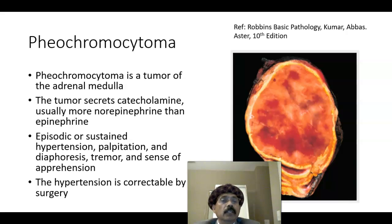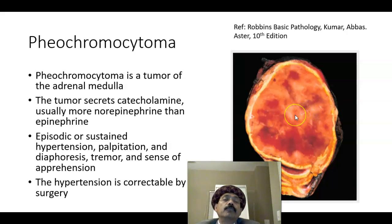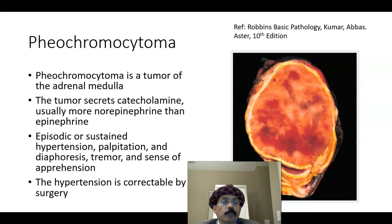Normally the adrenal medulla should secrete more epinephrine, but in the case of a tumor that is usually altered — more norepinephrine than epinephrine is secreted. There will be episodic or sustained hypertension, palpitations, high heart rate (tachycardia), diaphoresis with a lot of sweating, and pupillary dilatation due to sympathetic overactivity.